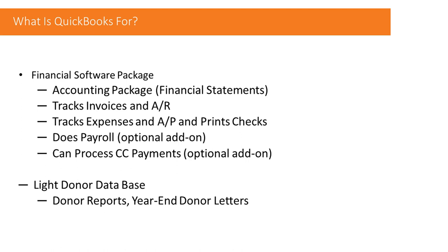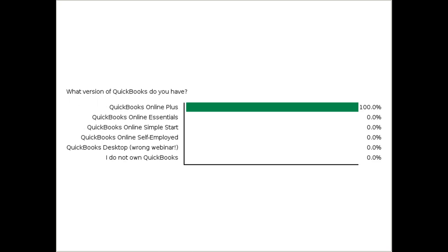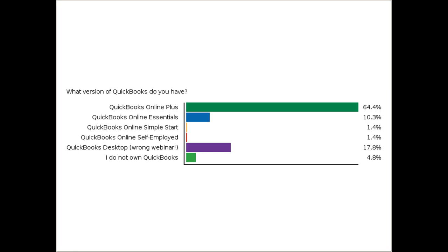I want everybody to answer this poll: which edition of QuickBooks Online do you have? Do you have Plus, Essentials, Simple Start, Self-Employed, Desktop, or do you not own it? The one you can get from TechSoup is only $50 a year as opposed to Intuit's $30 to $50 a month, and that one is Plus — which is actually the best one. It's the only one that allows you to do budgeting and the only one that allows you to track your programs. People with Simple Start, Self-Employed, or Essentials need to get Plus. It looks like we've got about 30 people on the desktop, so you're actually in the wrong webinar.